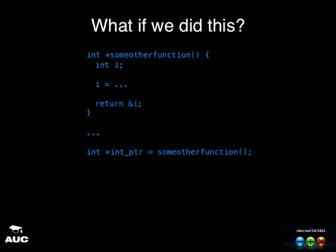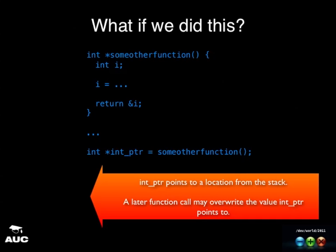Here's another function. What would happen is that the integer pointer returned from calling our function would point to a location on the stack. Initially the value it points to would be what we expected, but after a little while some other stack frame would have overwritten that value. Even though the pointer points to the same location, the value it points to has changed out from underneath us. That's a bug.